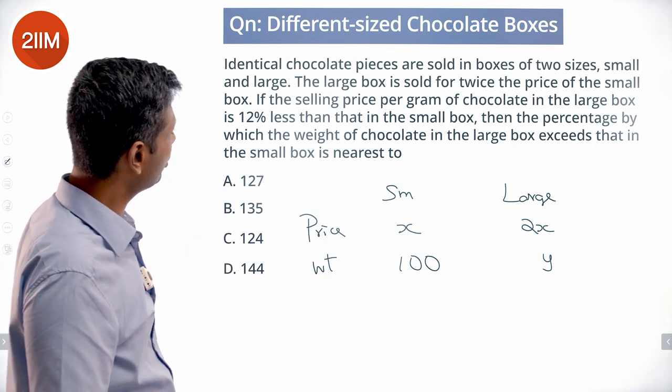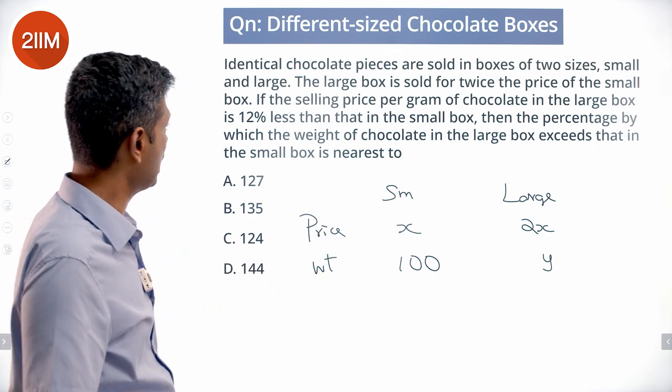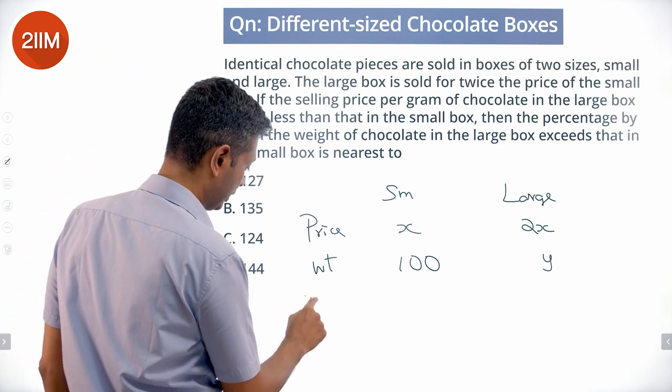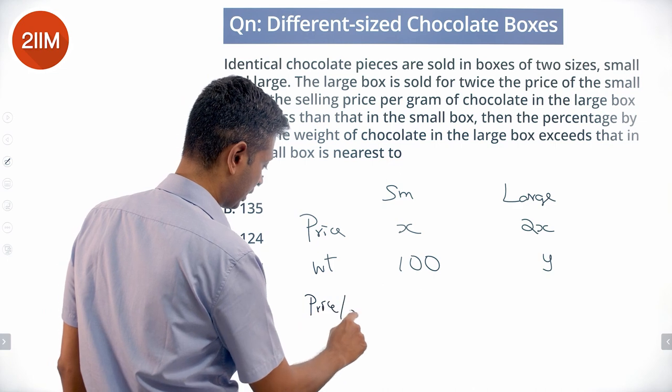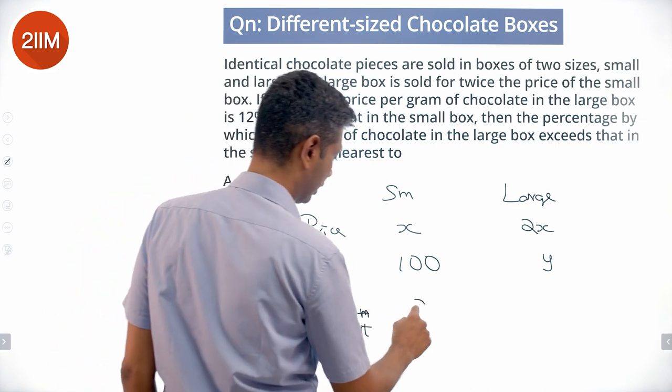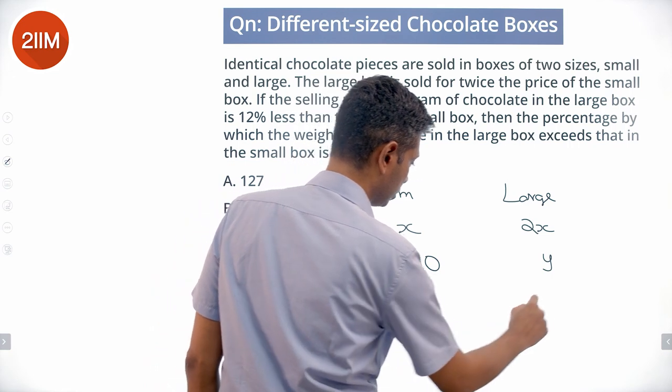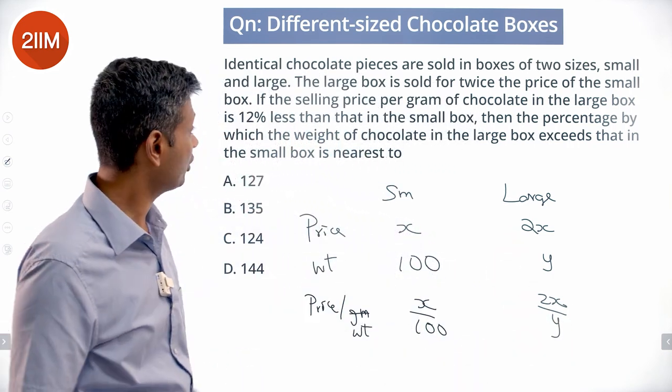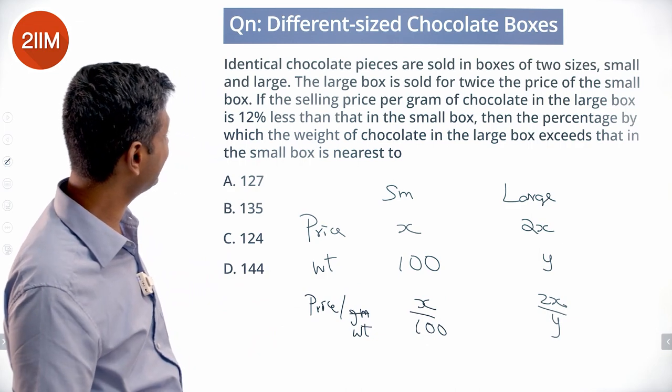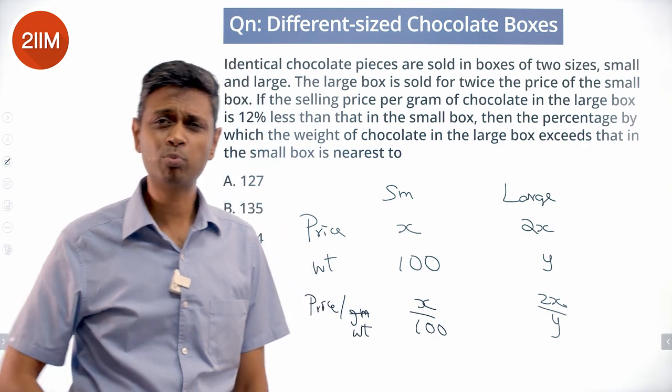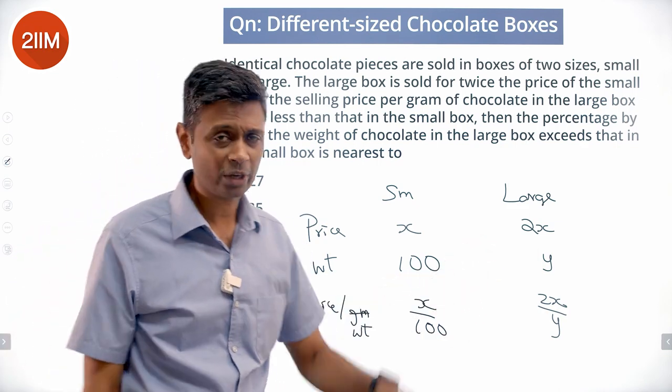The selling price per gram of chocolate in the large box is 12% less than that in the small box. Price per gram per weight: this is X by 100, this is 2X by Y. This 2X by Y is 12% less than that in the small box, so X by 100 into 0.88 is 2X by Y.